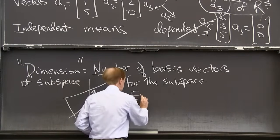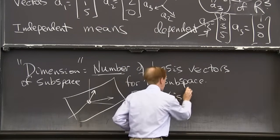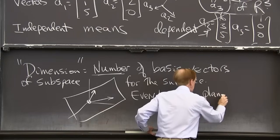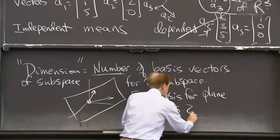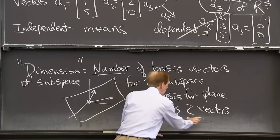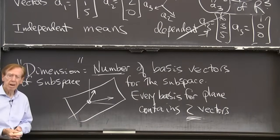So here, every basis for this plane contains two vectors. Always two. And that number two is the dimension of a plane.